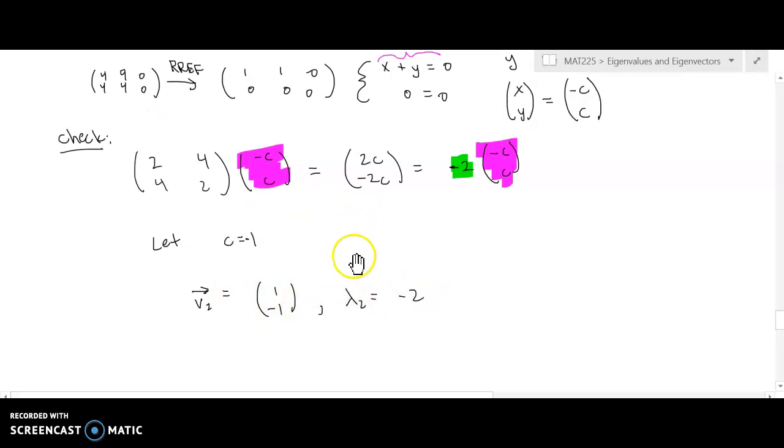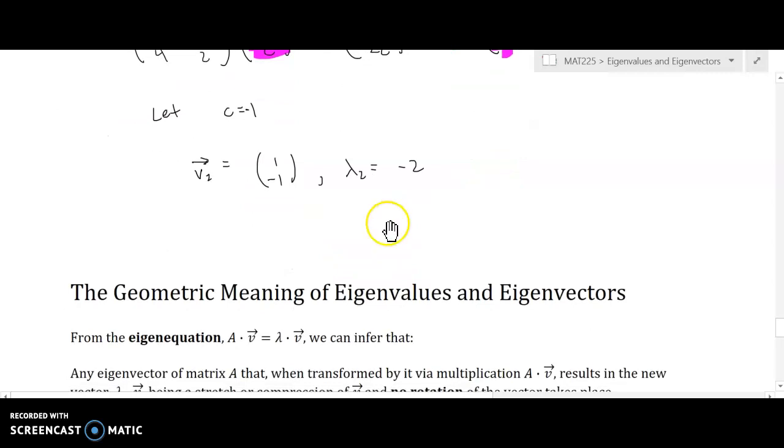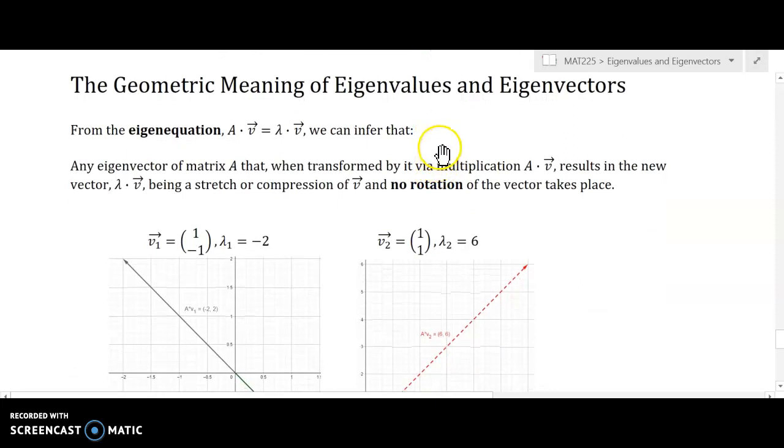So that's pretty much it for computing them. It requires a little bit more work than getting the eigenvalues. Next time we'll talk about how you actually get the eigenvalues in the first place, and then we'll put it all together. So we kind of mentioned that the geometric meaning of the eigenvalues and eigenvectors is that, first of all, we started with this eigenequation, Av equals lambda v. And from that algebraic structure, we can infer that any eigenvector of matrix A, that when transformed by it via multiplication, so if you take A times an eigenvector,